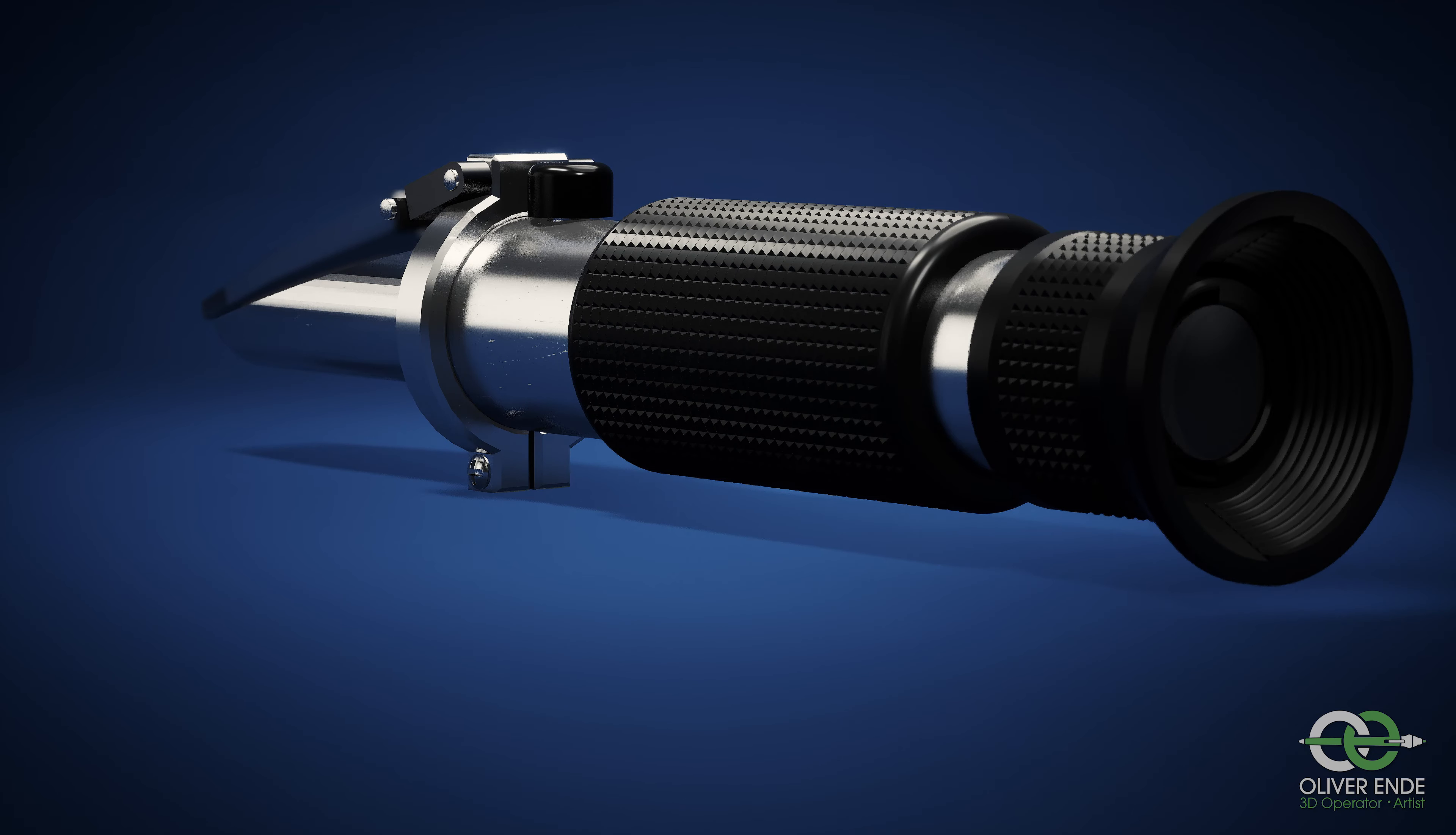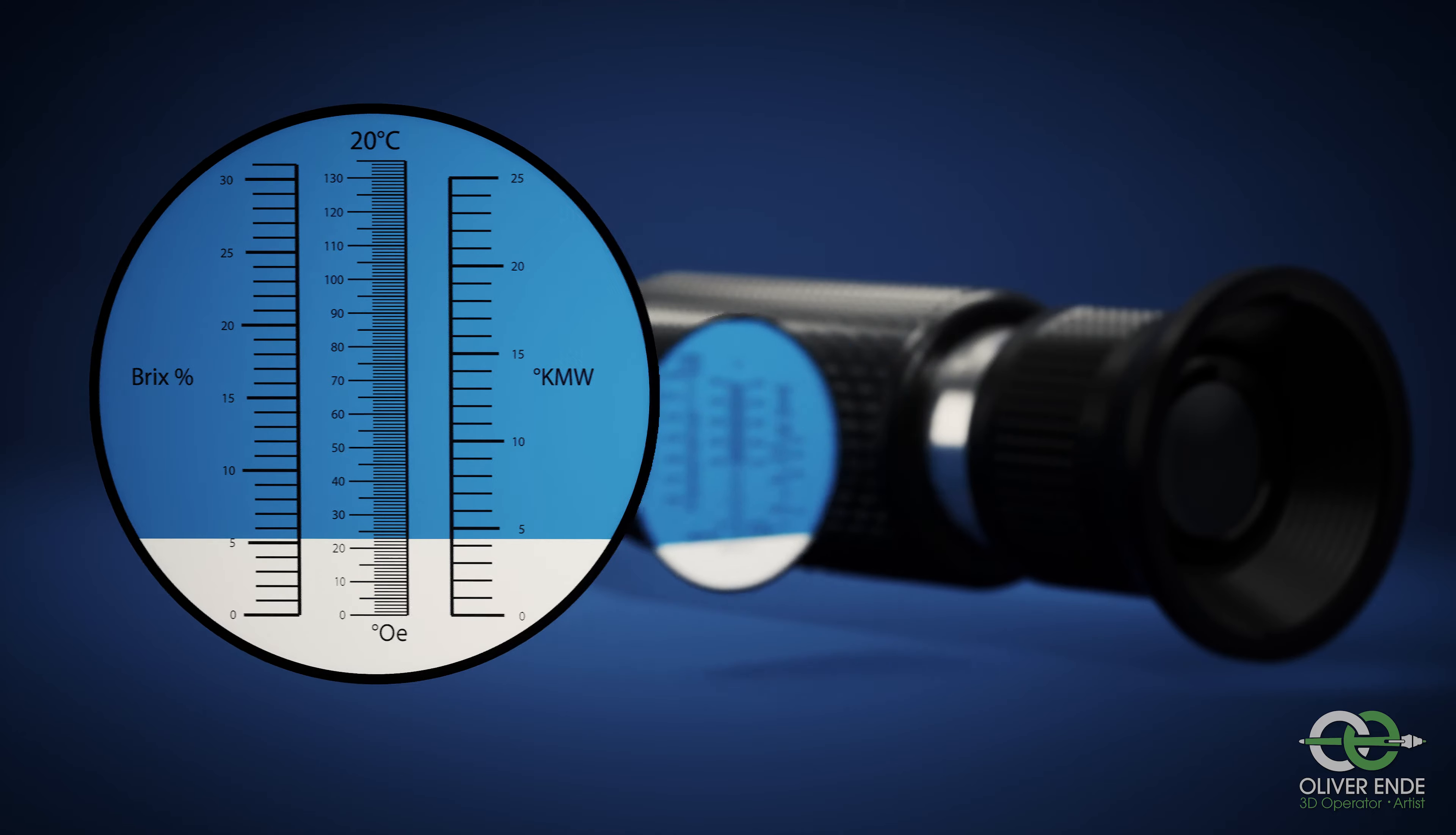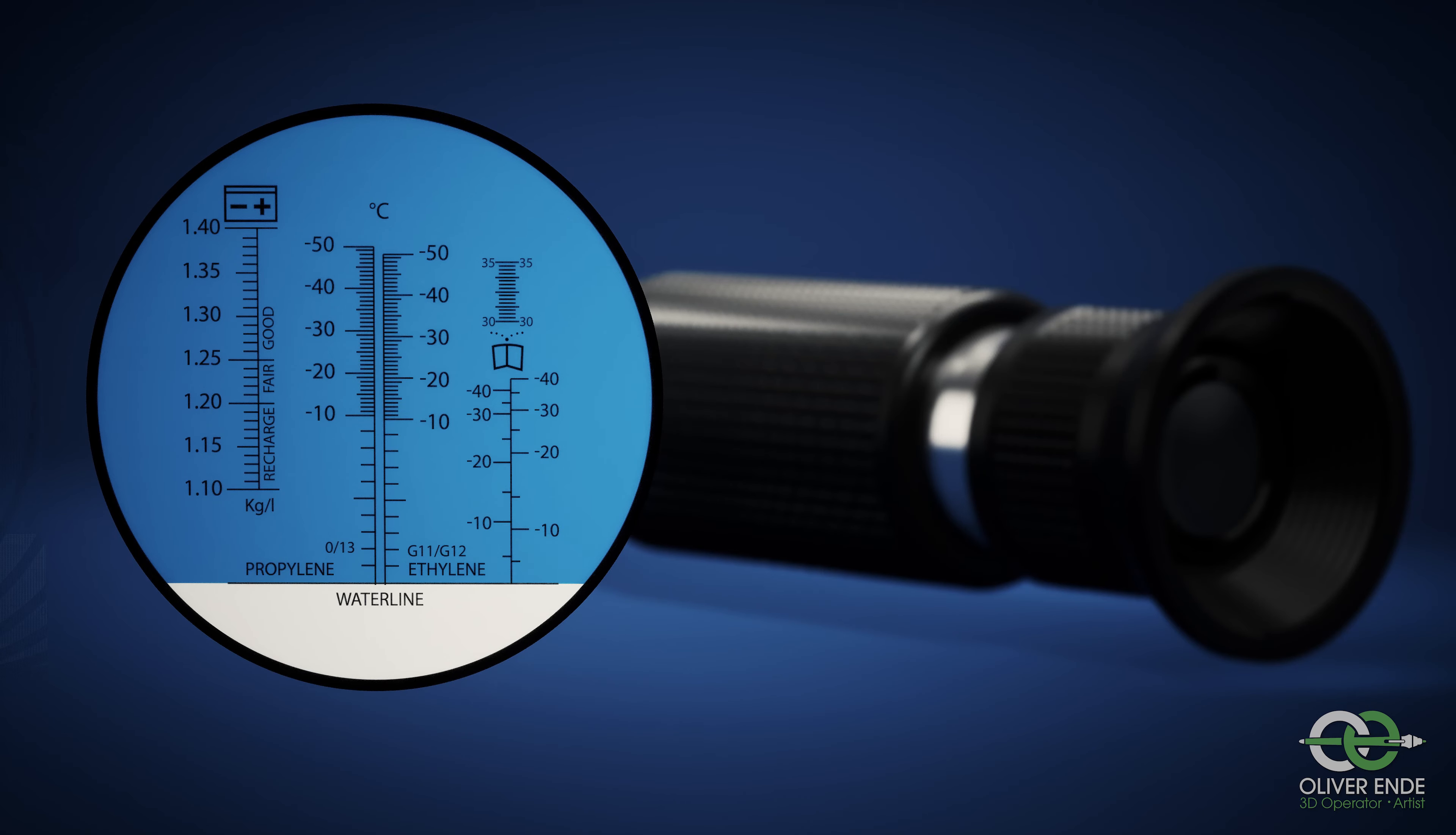The units of measurement of refractometers differ depending on the intended use. When measuring the sugar content in juice, the units of measurement are Brix, Oechsle, or KMW. In car refractometers, the ethylene glycol or propylene glycol concentration of the antifreeze can be determined.